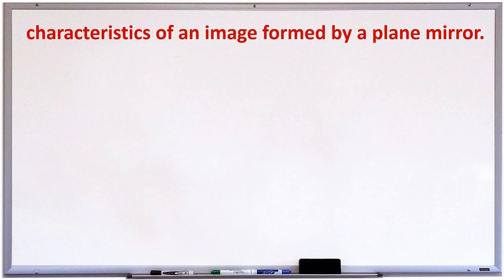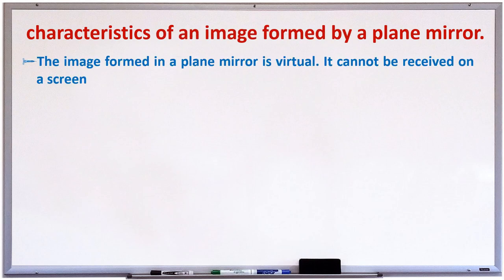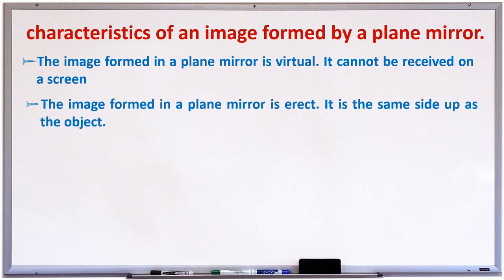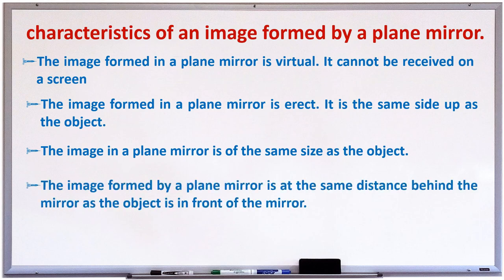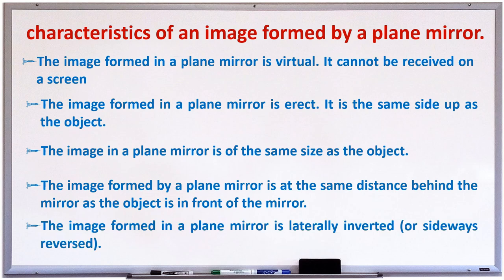Characteristics of images formed by a plane mirror: The image formed in a plane mirror is virtual — it cannot be received on a screen. The image is erect, that is the same side up as the object. The image is the same size as that of the object. The image is formed at the same distance behind the mirror as the object is in front of the mirror. The image is laterally inverted or sideways reversed.